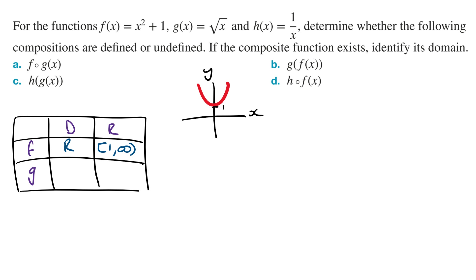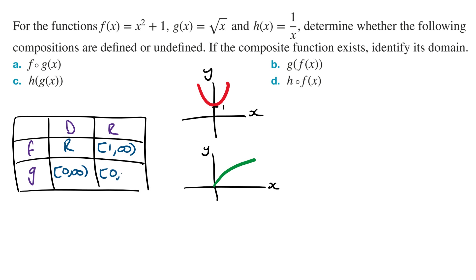g(x) is a square root function. Sketching g(x), the domain of g is from 0 to infinity and the range of g is also from 0 to infinity.